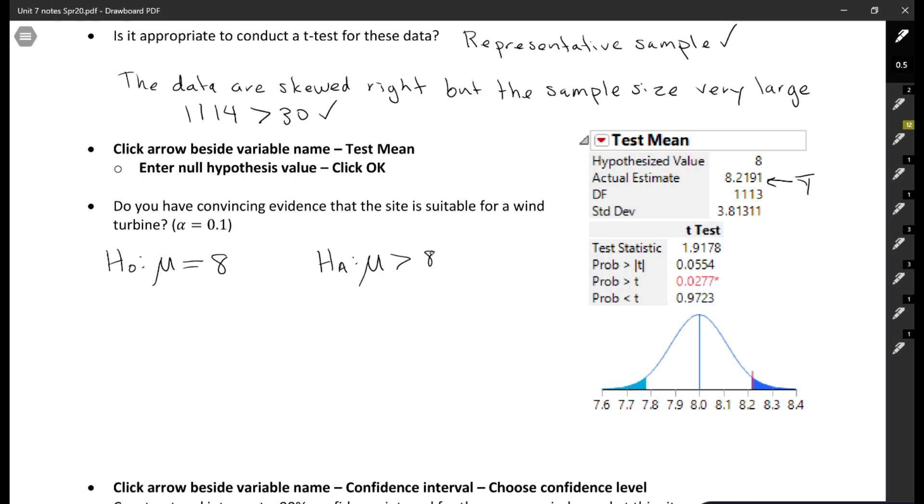We're just going to use the output that's given here. Where it says test statistic, that's your t statistic. I'll write that down: 1.9178. And then these three numbers are all p values. There's different options depending on what type of test you have. The one with the absolute value sign, that's the two-sided p value. Then you have two one-sided greater than and less than. You notice if you take 0.0277 and double it, you get the two-sided p value. That makes sense since the distribution is symmetric. We had a greater than sign, so we're going to take that value as our p value: 0.0277.